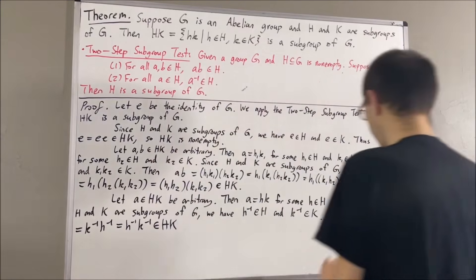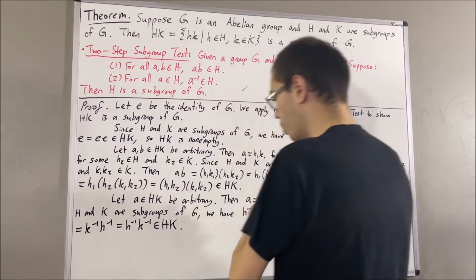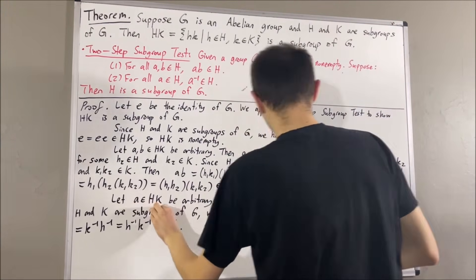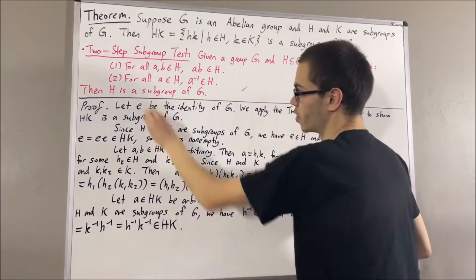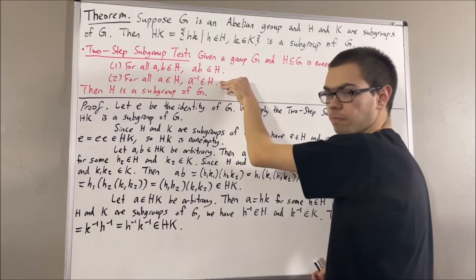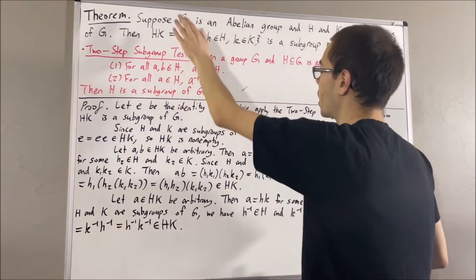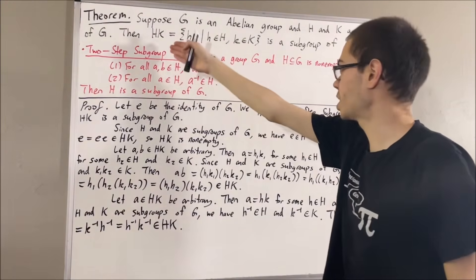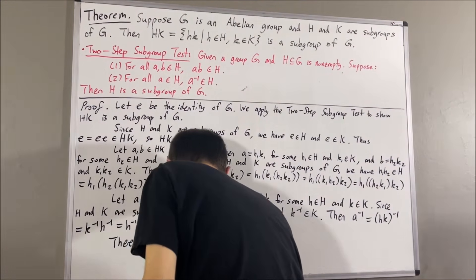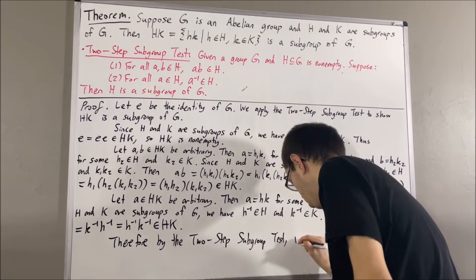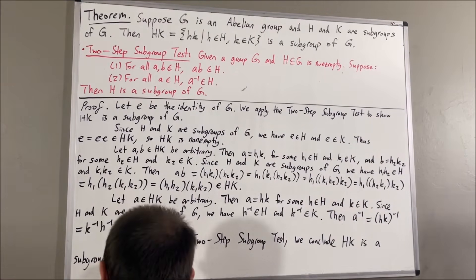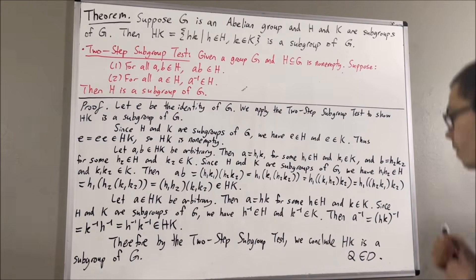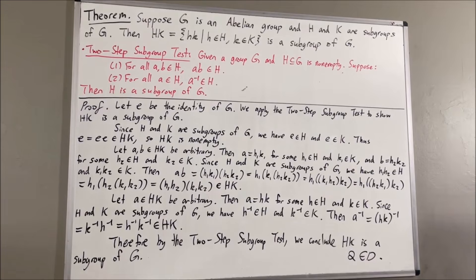So, this shows that the inverse of a belongs to hk. Putting this together, we have shown that given any element a in hk, its inverse must also be an element of hk. So we have verified the second condition. This verifies all conditions for hk to be a subgroup of g, and so by the two-step subgroup test, we can conclude that hk is a subgroup of g. This completes the proof.